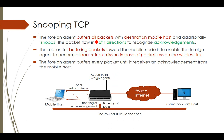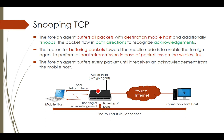The foreign agent — this access point — buffers all packets. It snoops the line to check what packets are transmitted and what acknowledgements are exchanged in both directions. Whenever a packet is sent from the correspondent host to the mobile host, that packet is also stored in the access point. The access point stores that data and forwards it.